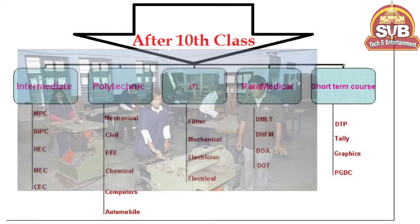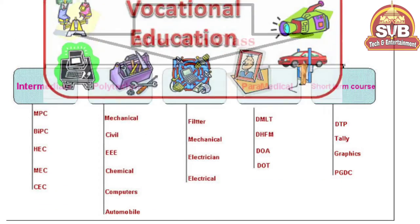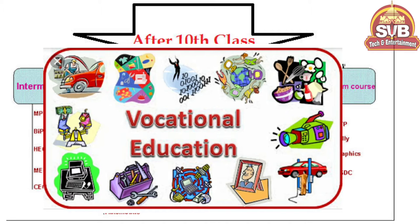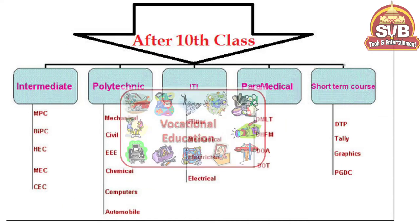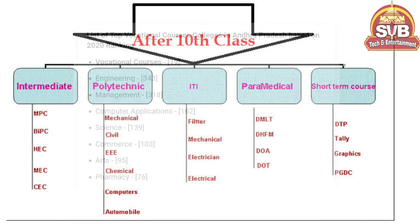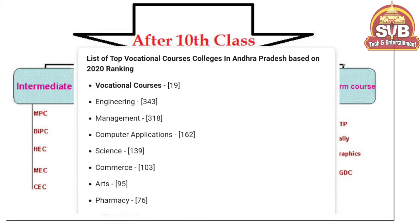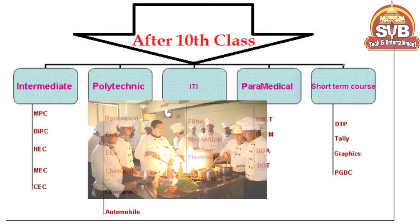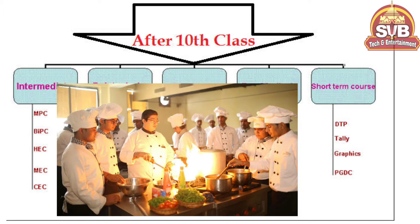There are vocational courses and different types of courses. Diplomas and ITI courses are also available. Some private institutes offer Inter plus MPC plus computers, or Inter BIPC plus MLT — they offer double courses. This is a vocational course and also a short-time course.